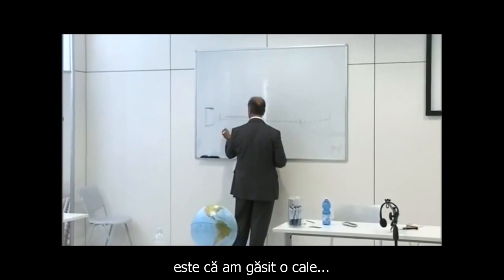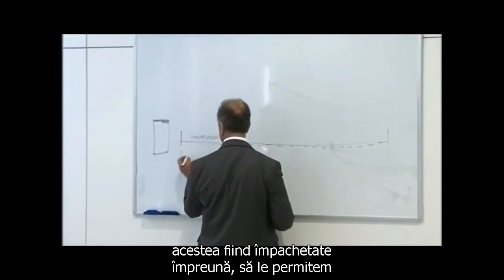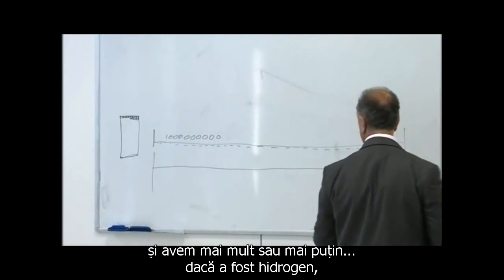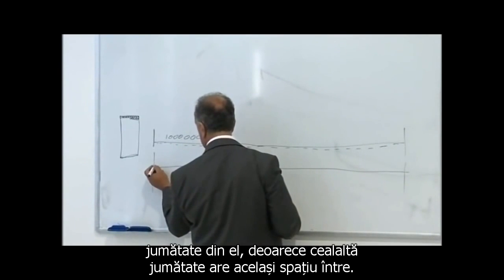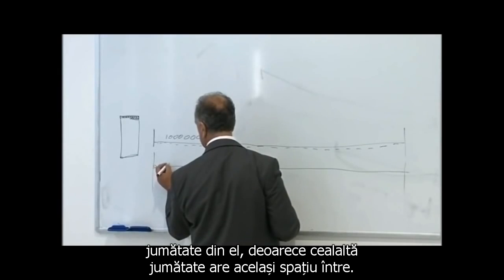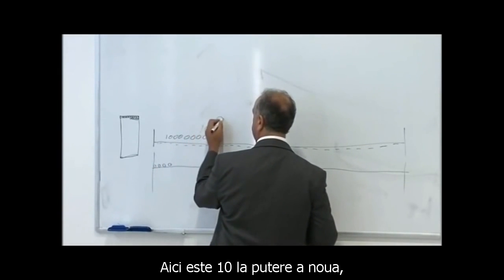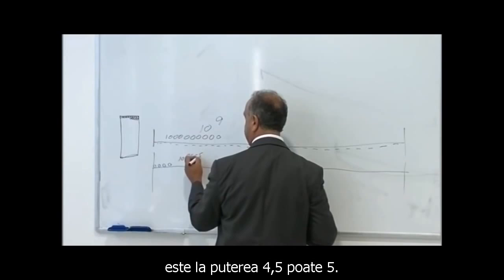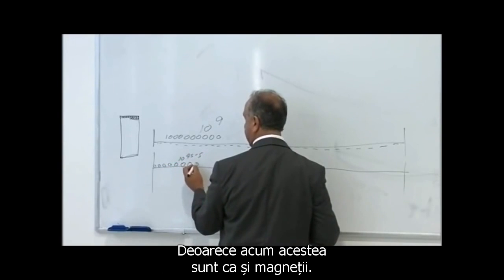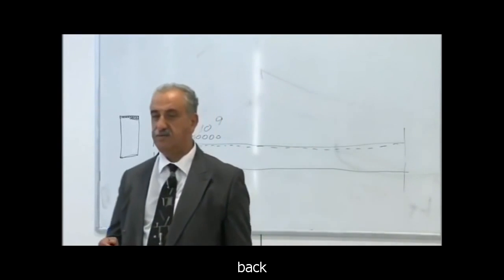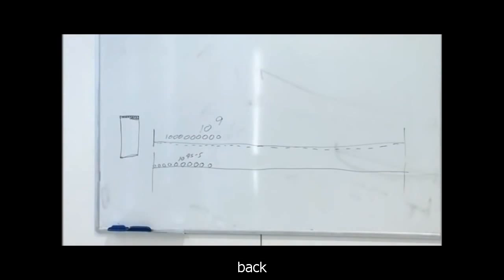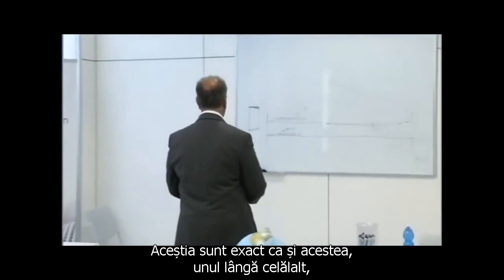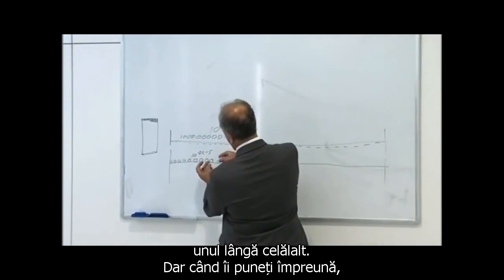But we have found a way that instead of them being packed together, we allow them to open up, and we have more or less — if it was Hydrogen — half of it, because the other half needs about the same gap open. Here is 10 to the power of 9. Here is the power of 4 and a half, maybe 5. Because now these are like magnets. When you put magnets next to each other, they need a distance. These are exactly like this, next to each other.